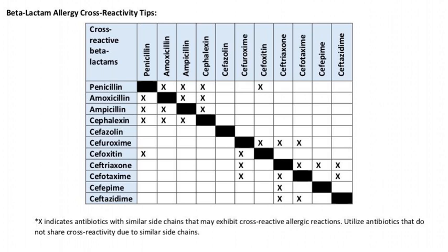Some interesting facts: 9 out of 10 reporting penicillin allergy are not truly allergic. 80% of patients with an IgE-mediated penicillin allergy actually lose their sensitivity after 10 years, since many carry that allergy from childhood. Carrying an inaccurate penicillin allergy diagnosis has been tied to increased length of stay and not receiving first-line therapies. Patients labeled penicillin allergic have a 23% higher incidence of C. diff, a 14% higher incidence of MRSA, and a 30% higher incidence of VRE infections.